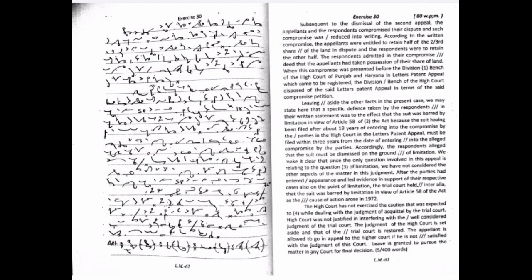The High Court has not exercised the caution that was expected to while dealing with the judgment of acquittal by the trial court. High Court was not justified in interfering with the well considered judgment of the trial court. The judgment of the High Court is set aside and that of the trial court is restored. The appellant is allowed to go in appeal to the higher court if he is not satisfied with the judgment of this court. Leave is granted to pursue the matter in any court for final decision.